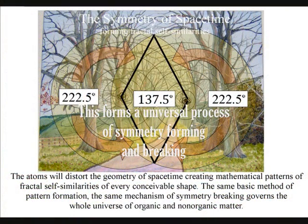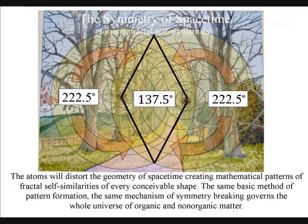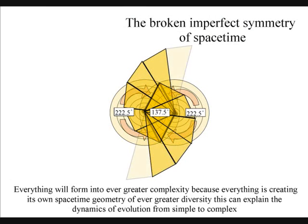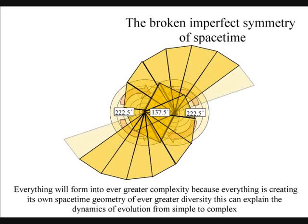This gives us a geometrical, and therefore mathematical, base for the evolution of life, explaining why nature never produces straight lines, but an endless array of curves and spirals. We have a universal dynamically evolving geometry, forming symmetry from simple dynamics.